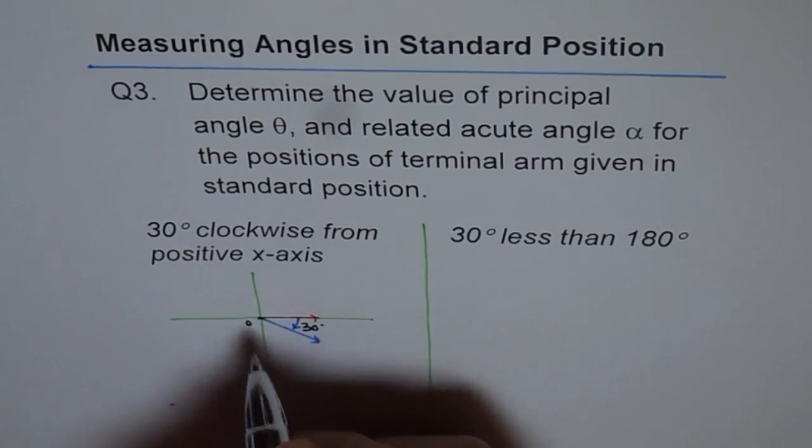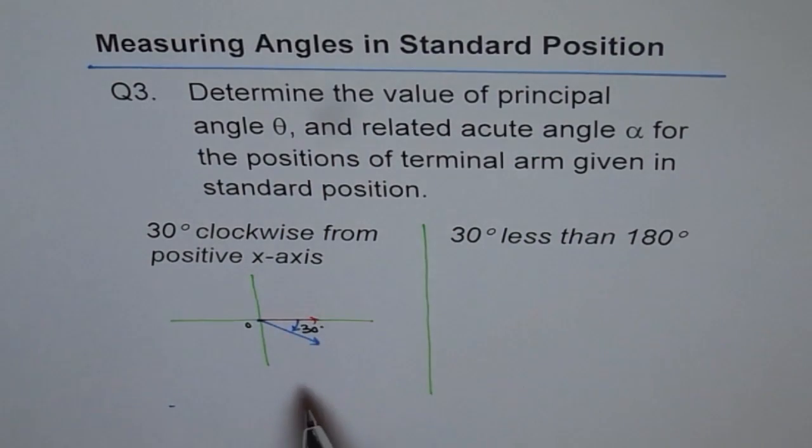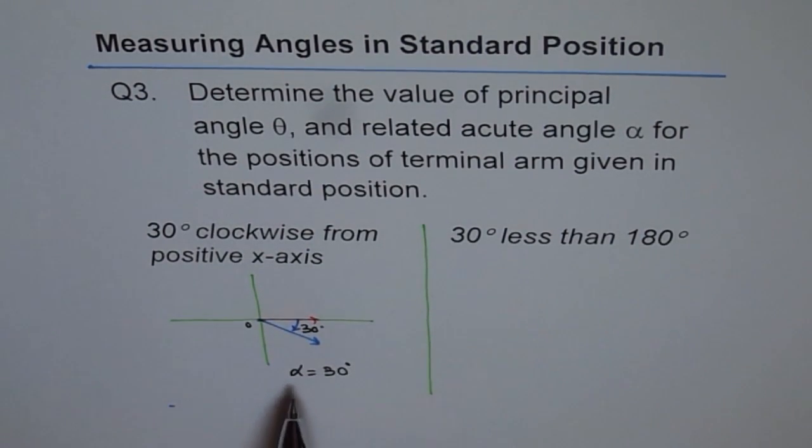Now from origin O. Determine value of principal angle and related acute angle. So that gives us related acute angle. So we can write alpha equals to 30 degrees. Note. Alpha is always positive. Acute. That means 0 to 90 degrees. Positive. In this case it is 30 degrees.